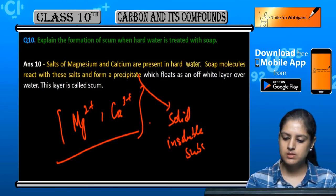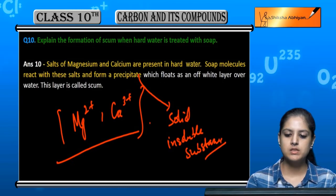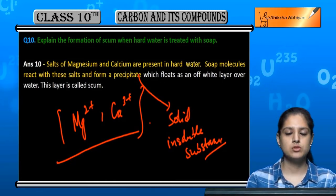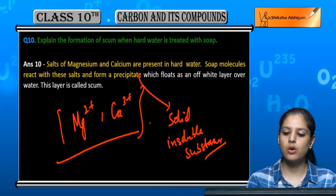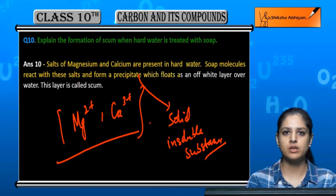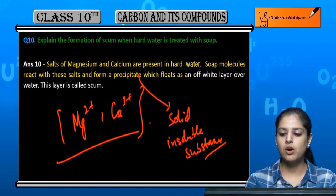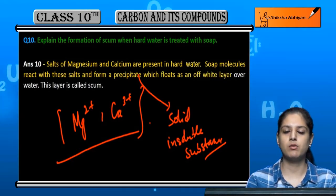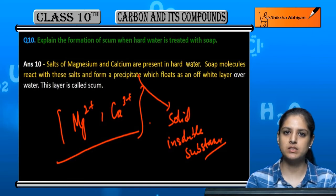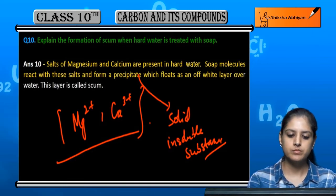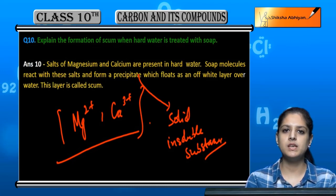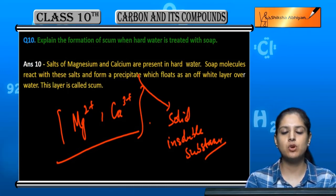insoluble substance forms. Because it is insoluble, it does not dissolve in the solution and floats in water. Its color is white, so it forms a white layer in hard water when we add soap. This layer is called scum.